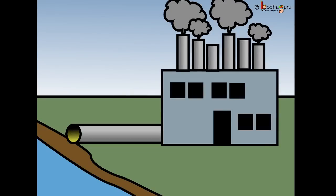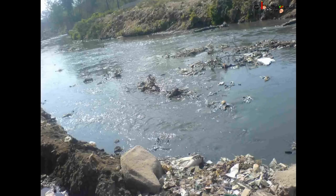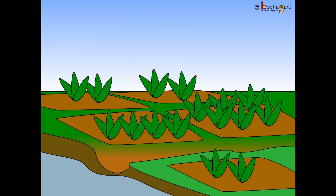At times, garbage from hotels and houses is often dumped in open drains which finally end up in the river. Pesticides and other chemicals from farms flow into the river due to rain and cause pollution.